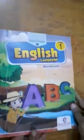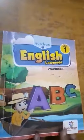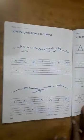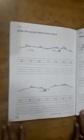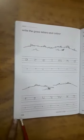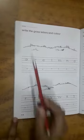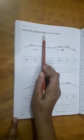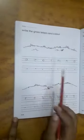Now students, take out your English workbook. Yes, English workbook. Now open page number 114. 114. Write the grass letters and colour. Again,